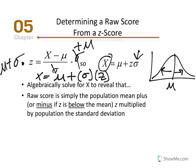We used simple algebra to isolate X versus solving for Z. The raw score is simply the population mean — the center — plus or minus Z multiplied by the population standard deviation. That product tells us whether we're moving above or below the center of the distribution.